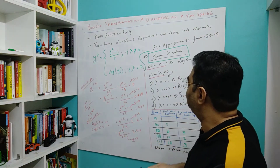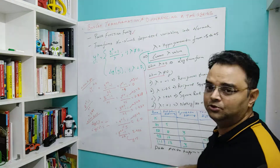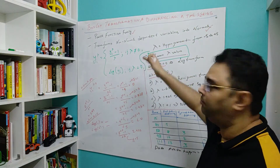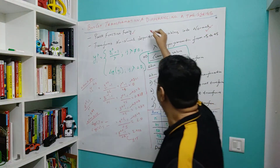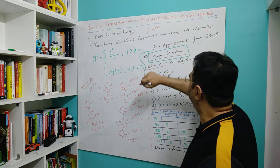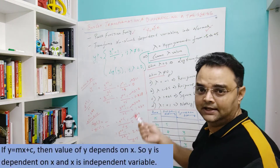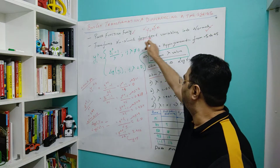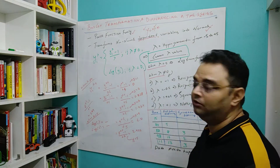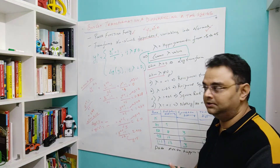The Box-Cox transformation is a power function family. It belongs to a series of transformations within the power function and it basically transforms non-normal dependent variables into normal dependent variables. Recall that y is the dependent variable in y = mx + c, because y depends on x. A Box-Cox transformation is a power family transformation which transforms non-normal dependent values into normal values.